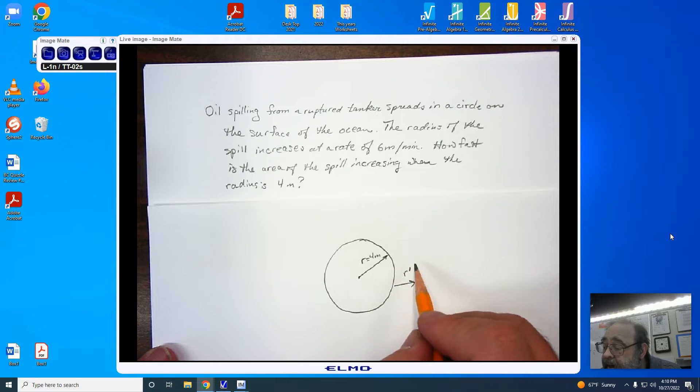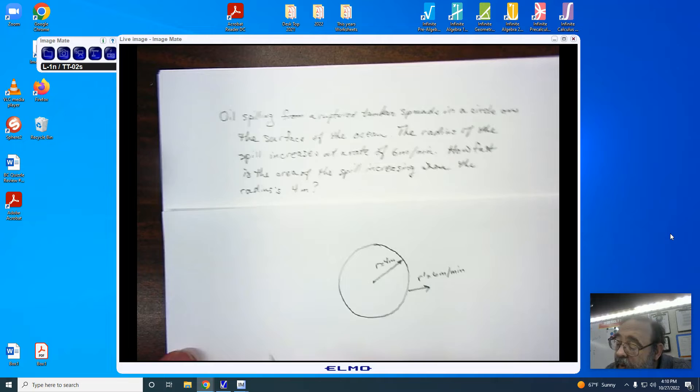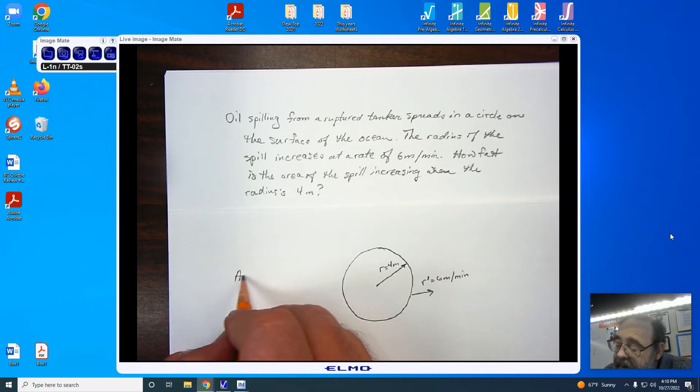the rate of that radius, we're going to be writing as 6 meters per minute. Now, we already know the area of the circle, but if you don't, this would be given to you on a test, and I'll tell you that the area of the circle is pi r squared.